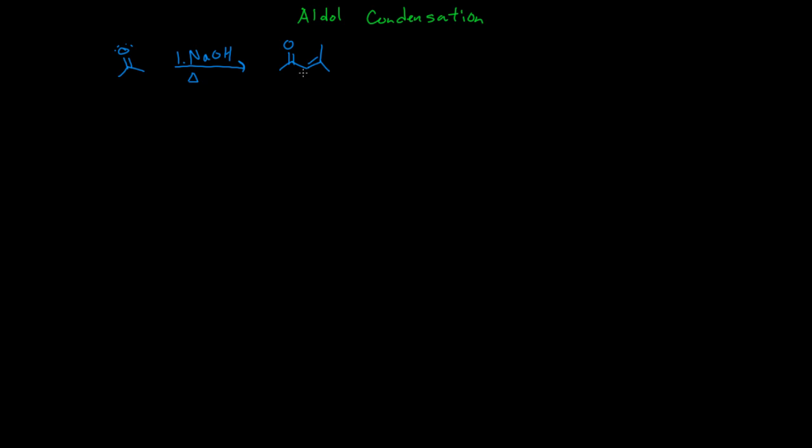It's called an alpha-beta unsaturated ketone. And so this is the alpha carbon here and this is the beta carbon here. And of course it's a double bond so that's why it's called unsaturated. So alpha-beta unsaturated ketone or aldehyde depending on of course what the starting materials are.